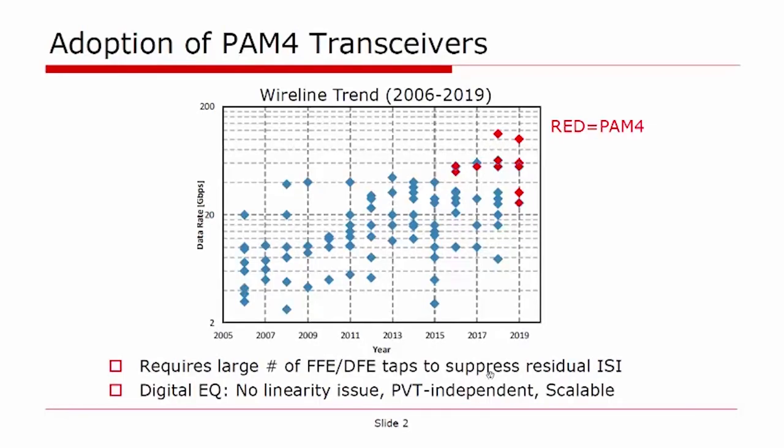In recent years, wireline data rate has gone beyond 50 gigabit per second, and PAM4 signaling has been widely adopted. The performance of a multi-level signaling such as PAM4 is very sensitive to residual ISI. In order to suppress residual ISI, it requires a large number of equalization taps such as FFE or DFE.